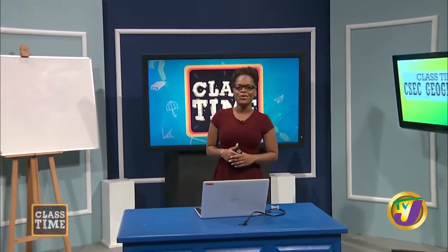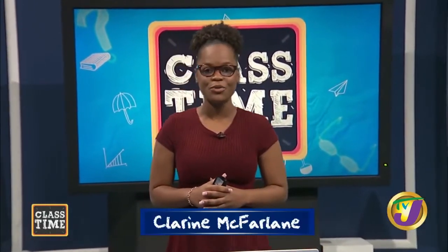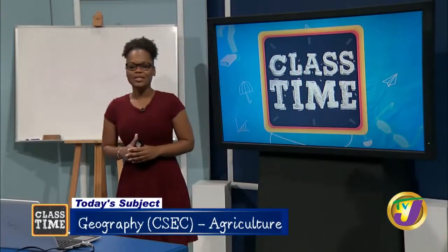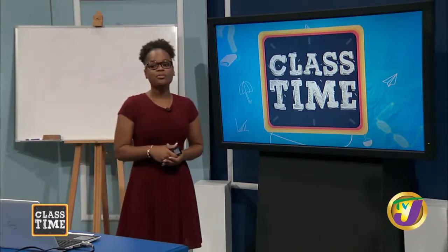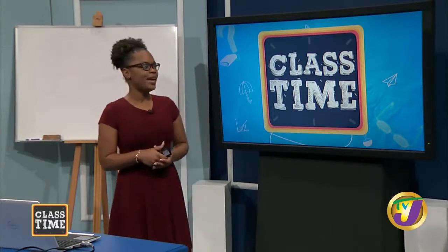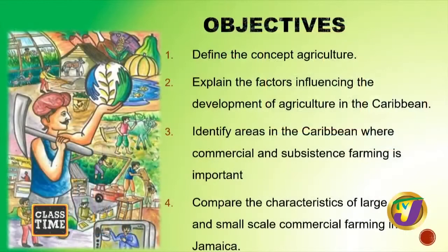Welcome back to Class Time. We now move to CSET Geography. I am Clarine McFarlane and today's lesson will focus on agriculture. Today we will be discussing agriculture as a primary economic activity. Our objectives include defining the concept of agriculture, explaining the factors influencing the development of agriculture in the Caribbean, identifying areas where commercial and subsistence farming is important, and comparing the characteristics of large-scale and small-scale farming in Jamaica.